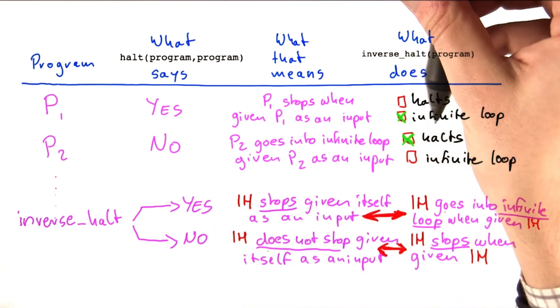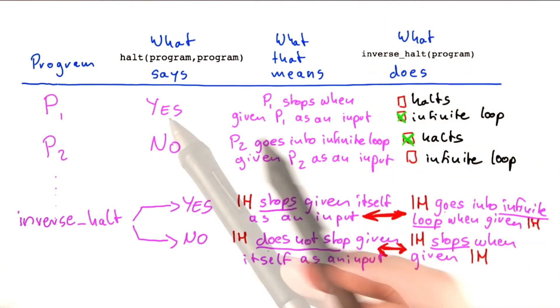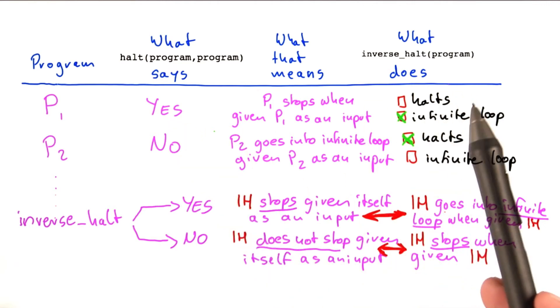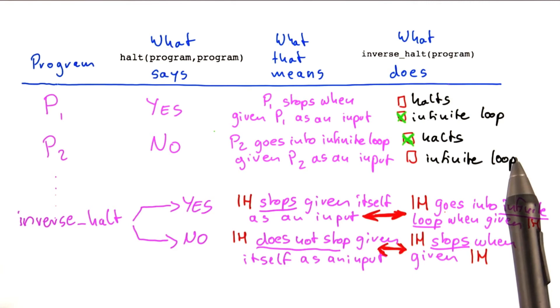Now, the other way of constructing this table is more or less going this way. So based on what halt will say that the program does, we can predict the behavior of inverse halt. And this construction works perfectly fine.